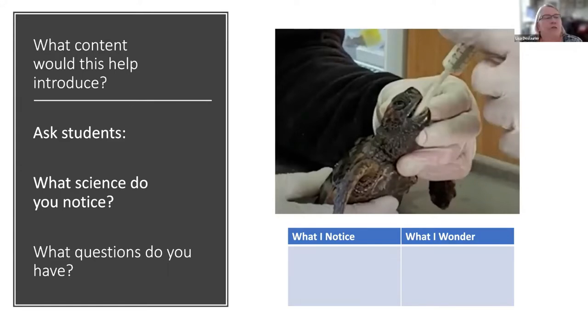So here's how you could introduce a phenomenon. They have a picture here of a sea turtle and something's going on. You can ask kids to either do a driving question board which I've done a whole workshop just on that or you can have them write in their interactive science notebooks. Just have a chart with what I notice and what I wonder. Does anyone have a question about what's going on in this picture that you might want to share with the group?